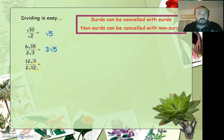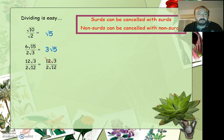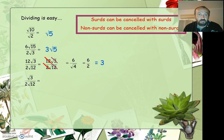Continuing on: 12 root 3 divided by 2 root 12 — well, 12 divided by 2 is 6, and root 3 divided by root 12 gives root 3 over root 12. There are 4 threes in 12, so this comes to 6 over root 4. Root 4 is 2, so this is 6 divided by 2, which equals 3. For the root 3 and root 12, they come down to root 4, and root 4 is 2, so this is 1 over 2 times 2, which equals 1 over 4. So this one cancels down and gives us ultimately a non-surd.